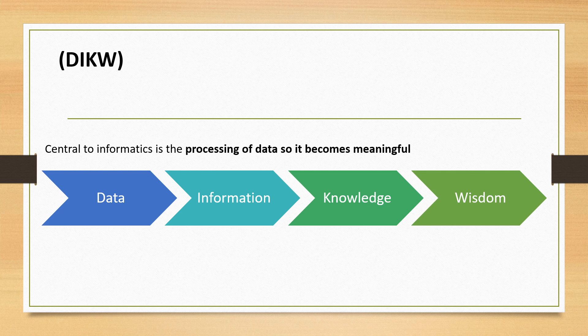Central to informatics is the processing of data so it becomes meaningful. As mentioned previously, Rowley states: the hierarchy is used to contextualize data, information, knowledge, and sometimes wisdom with respect to one another, and to identify and describe the processes involved in the transformation of an entity at a lower level in the hierarchy — which is data — to an entity at a higher level in the hierarchy — which is information, knowledge, and wisdom. The implicit assumption is that data can be used to create information, information can be used to create knowledge, and knowledge can be used to create wisdom.